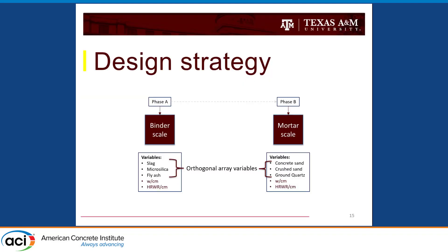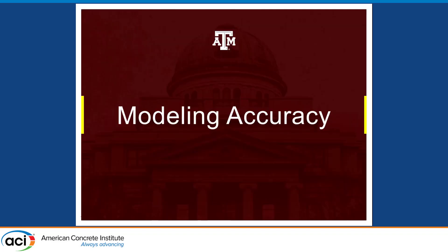My particular strategy was to first optimize at the binder scale by varying the cementitious materials available, then in the second phase optimize the aggregate and the UHPC as a whole, while still using information on the water-to-cement ratio and superplasticizer dosage for the machine learning model.